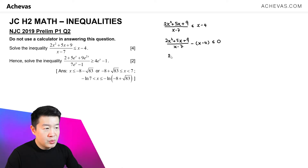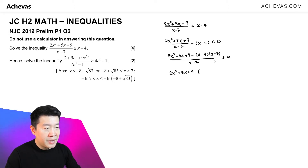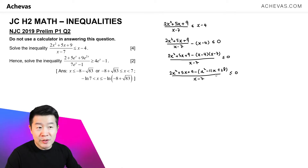So it will be 2x squared plus 5x plus 9 minus x minus 4 times x minus 7, all divided by x minus 7, less than or equal to 0. Expanding this, we have 2x squared plus 5x plus 9 minus x squared minus 11x plus 28, divided by x minus 7, less than or equal to 0.